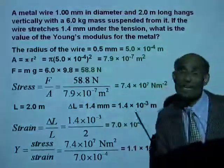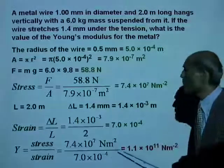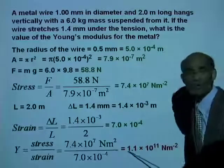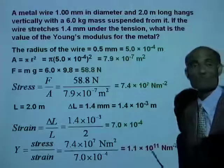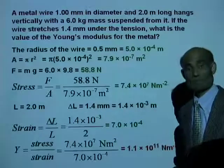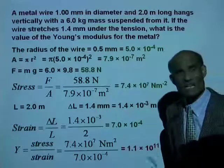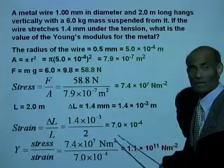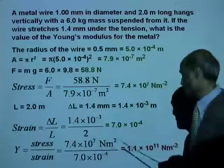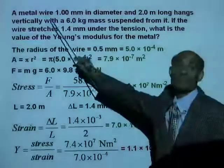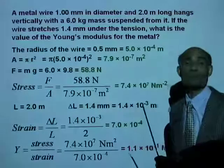Can you look back at the table I provided and tell me what metal this wire is made of, given this Young's modulus? Does it agree with the value for steel? I think this is steel. Let me know if you got that answer — what metal is this wire made of?